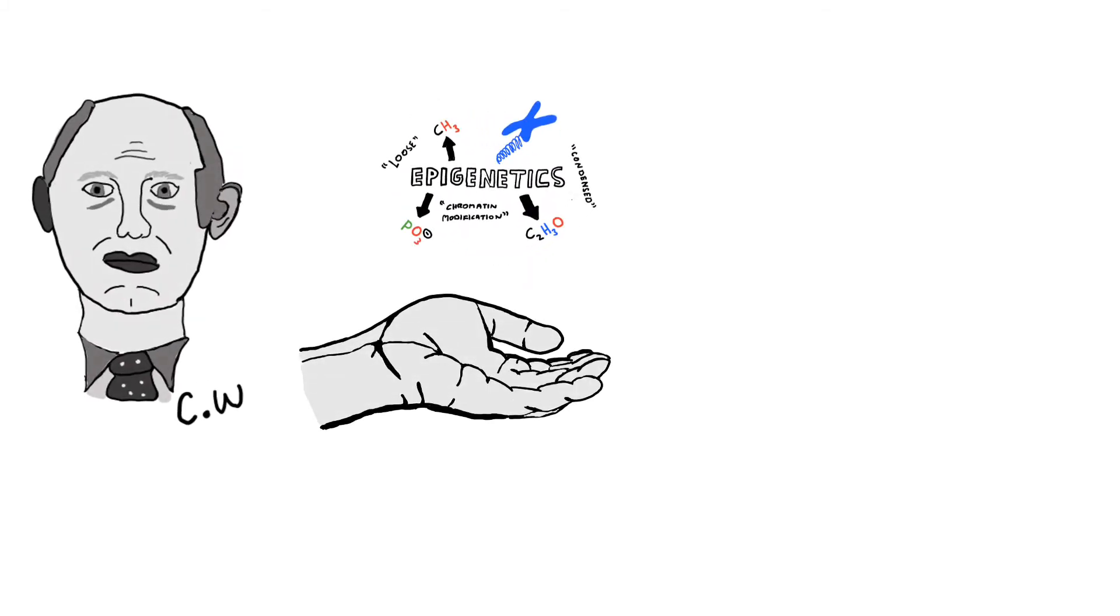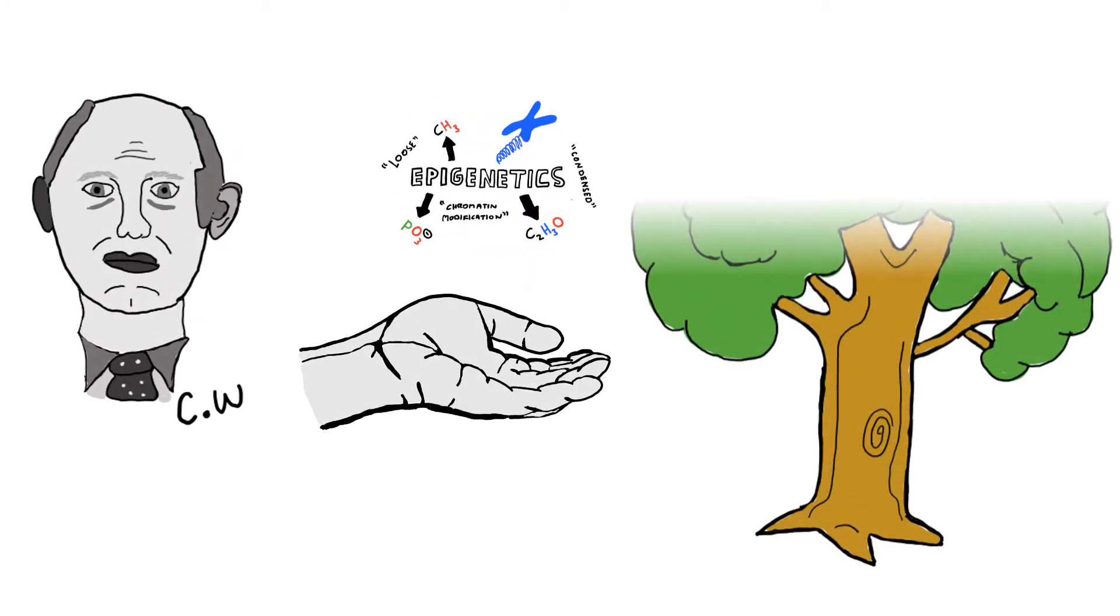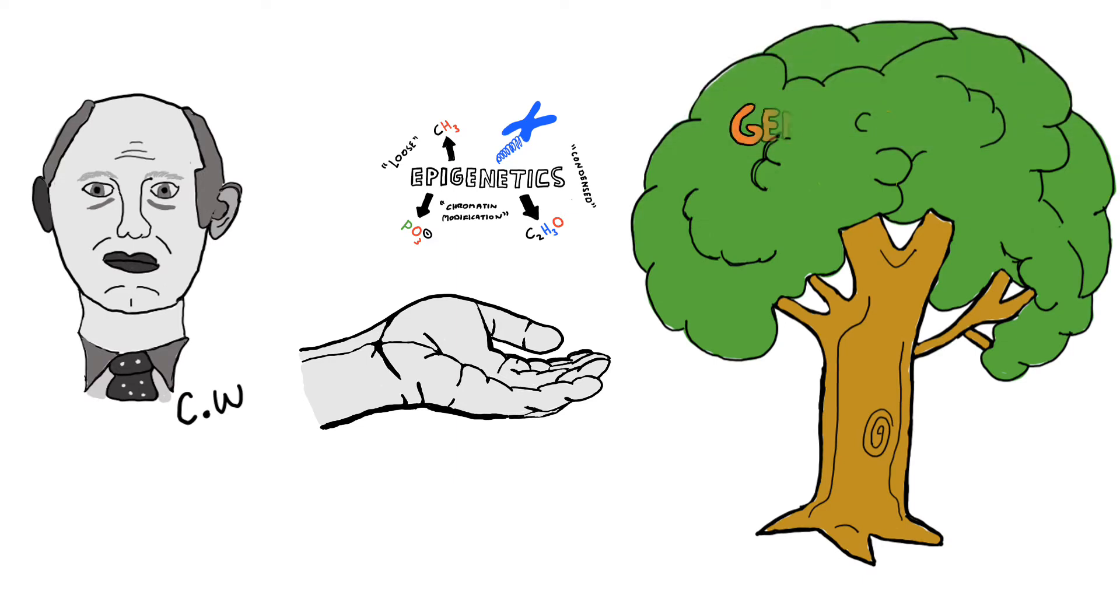After much speculation around epigenetics for decades, Conrad Waddington introduced the term to modern biology in 1942, defining it as the branch of biology which studies the causal interaction between genes and their products, which bring the phenotype into being.